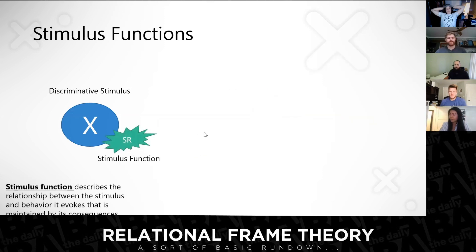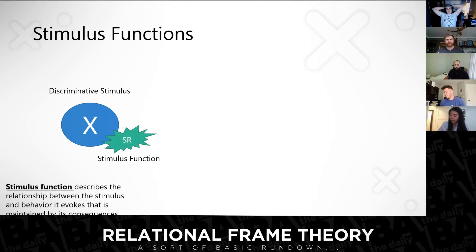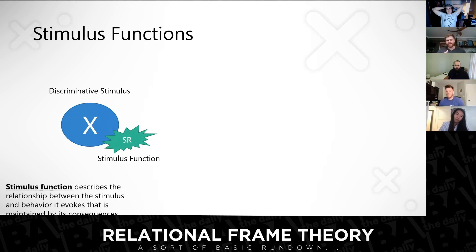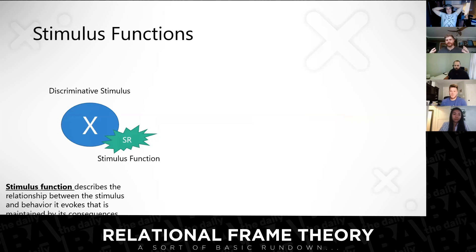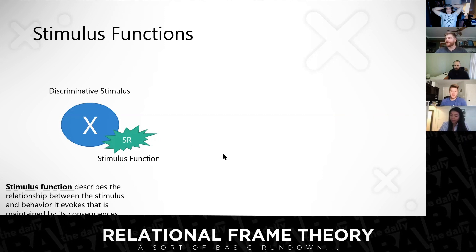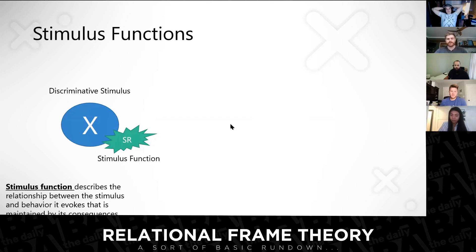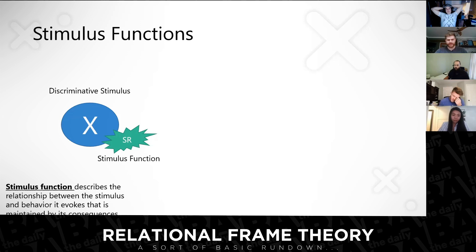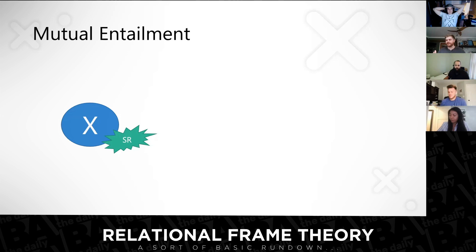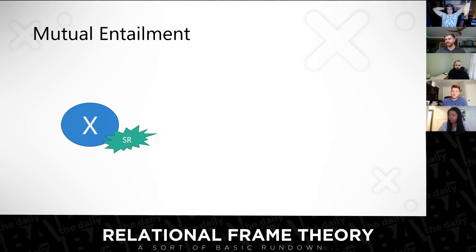We can call this 'stimulus function,' and stimulus functions are at the core of what relational frame theory gets at, at least the way I see it. A stimulus function is the relationship between the stimulus and the behavior it evokes, maintained by its consequences. What does the stimulus do? What behavior occurs most readily in the presence of that stimulus? The first process we need to understand for relational frame theory is the idea of mutual entailment.